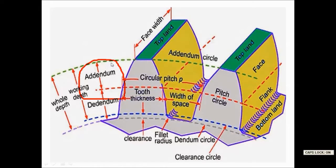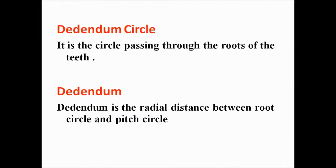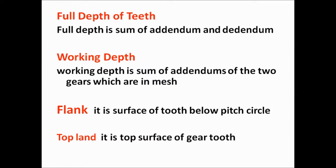Dedendum circle — as you can watch, this curve shows the dedendum circle. The dedendum circle is the circle passing through the root of the teeth. Dedendum is the radial distance between the root circle and the pitch circle. Full depth of the teeth is the sum of addendum and dedendum. Working depth is the sum of the addenda of the two gears which are in mesh.